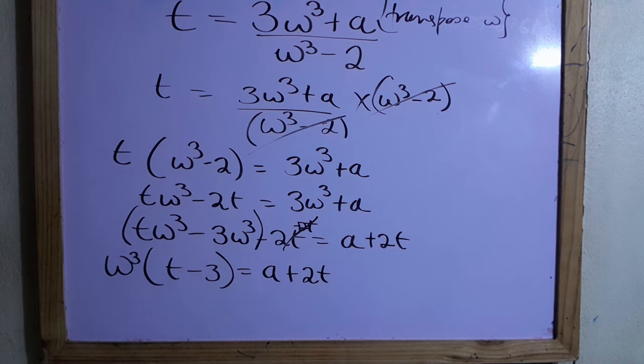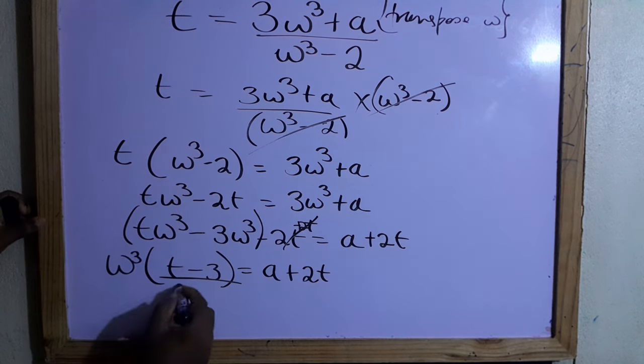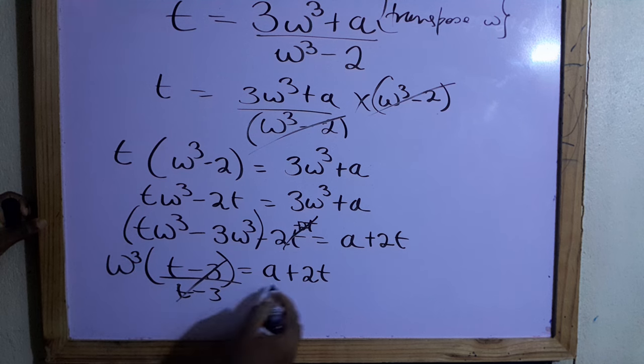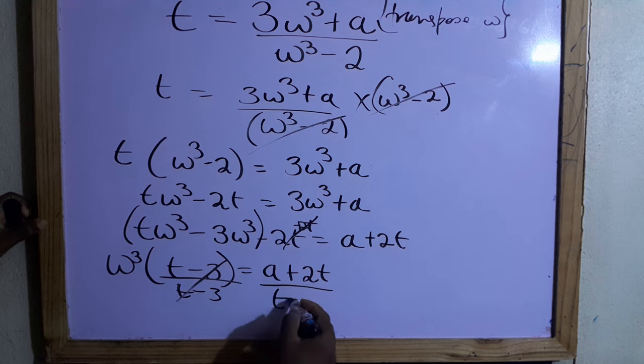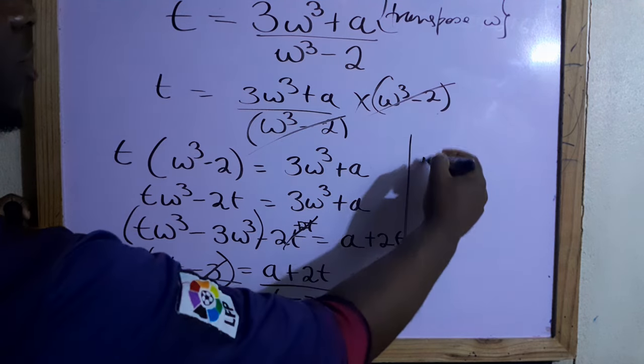The next step, we divide by whatever is inside this bracket, which is ℓ - 3. Anything done to one side, done to the next side. So this is what we have now: we have ω³ equal...